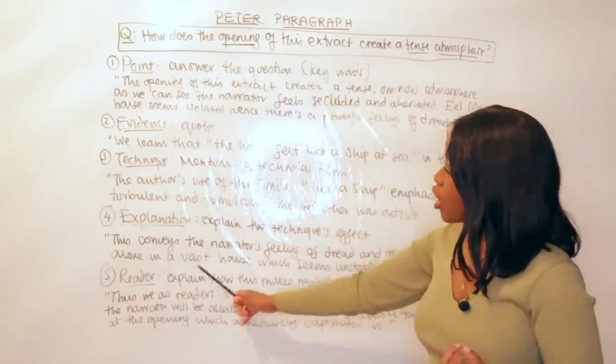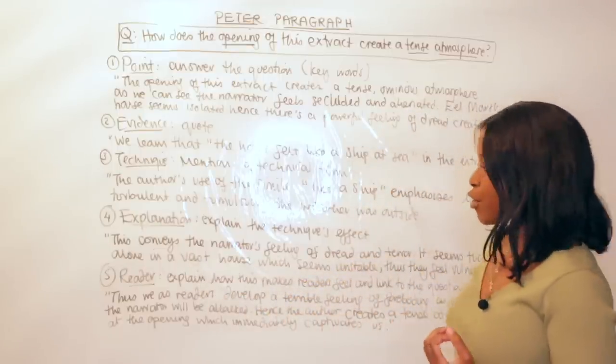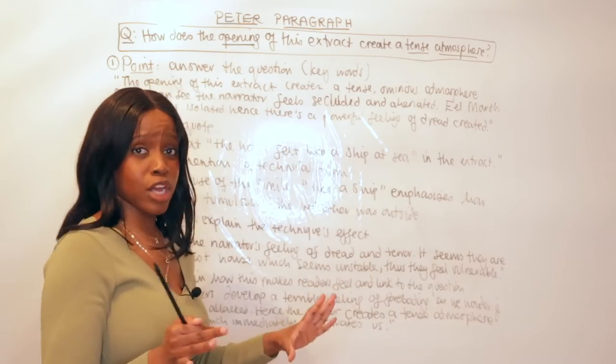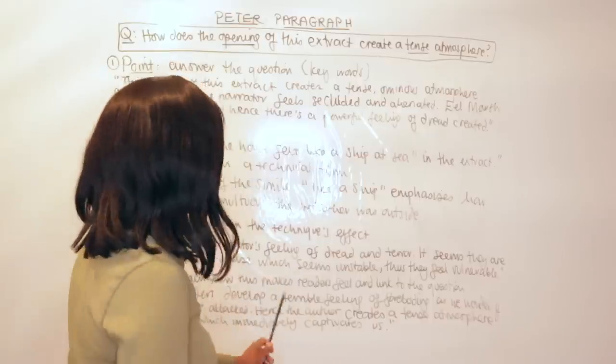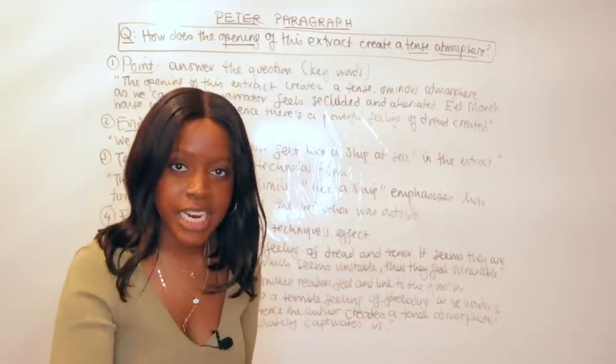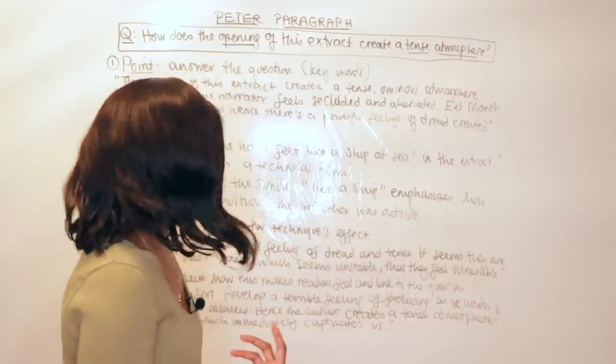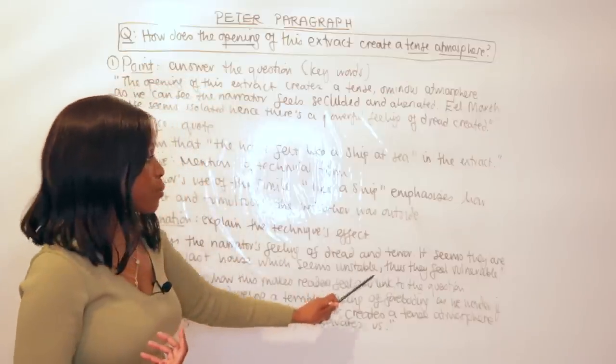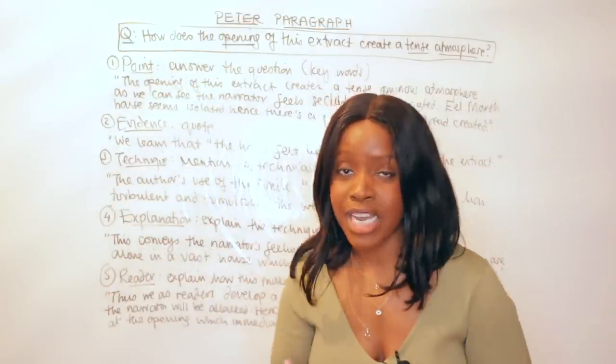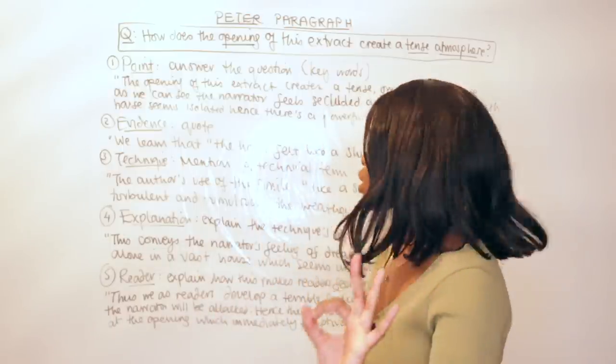It seems they are alone in a vast house which seems unstable, thus they feel vulnerable. Now I've explained how this simile also is showing that the narrator is totally alone—there's nobody around them. So I've said that the narrator feels dread and terror—that's the first explanation. But also, I then expand on that by saying also the way the house is described, it seems really unstable, so the narrator feels totally exposed, totally vulnerable. That is my explanation. I'm now explaining this technique a bit further. However, I'm not yet done with my PETA paragraph because I have to talk about the R bit—the Reader, how this affects us as readers.